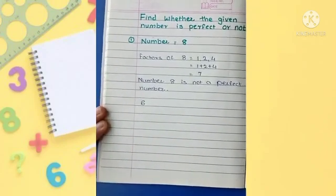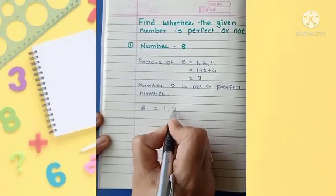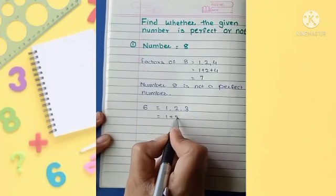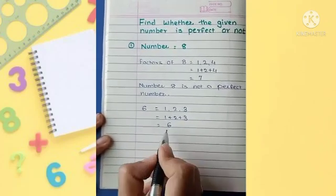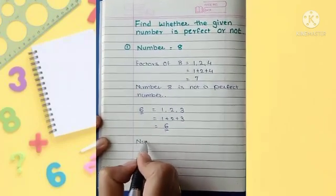6. Now what are the factors of 6? Factors of 6 are 1, 2, and 3. Let's add them: 1 plus 2 plus 3. Yes, it is equal to 6. As this addition and the number is equal, number 6